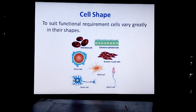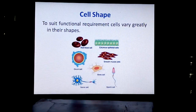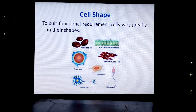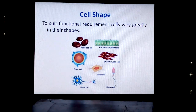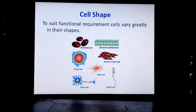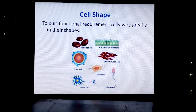To suit functional requirements, cells vary greatly in their shapes. Cells can be disc-like, polygonal, rectangular, cuboid, thread-like, branched, and even irregular. For example, epithelial cells in our body are cylindrical; striated muscle cells are banded; smooth muscle cells are spindle-shaped; nerve cells are branched and long thread-like; guard cells are kidney-shaped; amoeba cells are amoeboid — that is, shapeless and irregular; and human red blood cells are circular and biconcave.